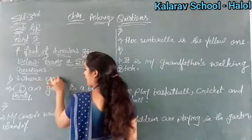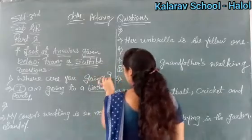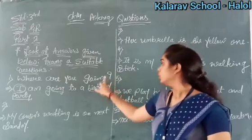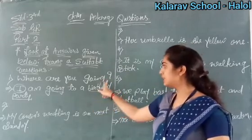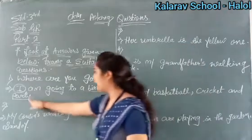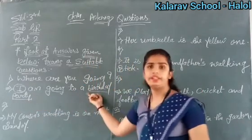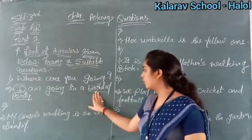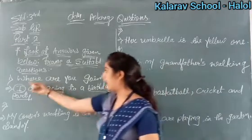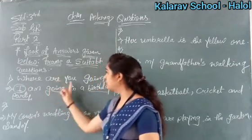Where are you going? The answer is: 'I am going to a birthday party.' Birthday party means it is a place — he is going somewhere. So what we have to ask is 'Where?' Don't forget to put a question mark, otherwise this will be wrong. Because this is the answer and this is the question, you have to put a question mark compulsory. So: Where are you going?